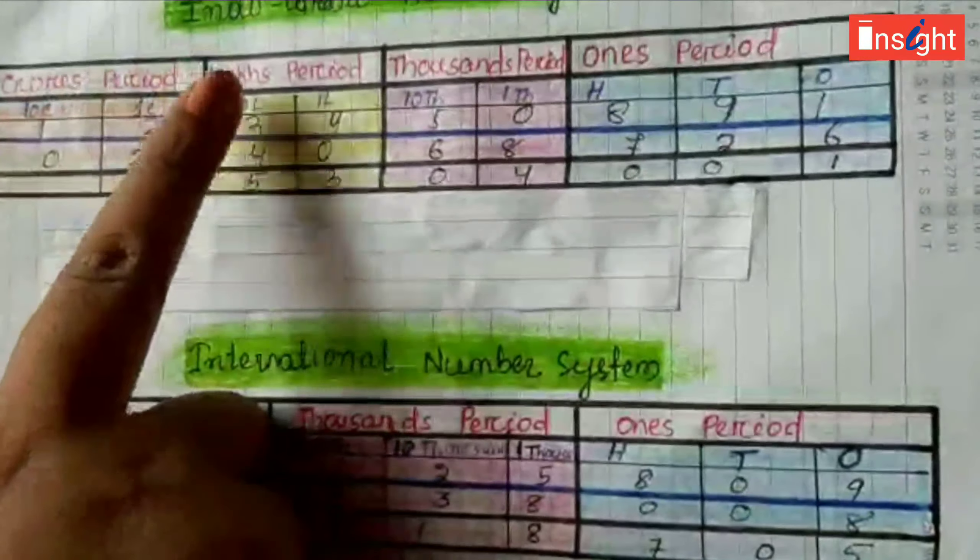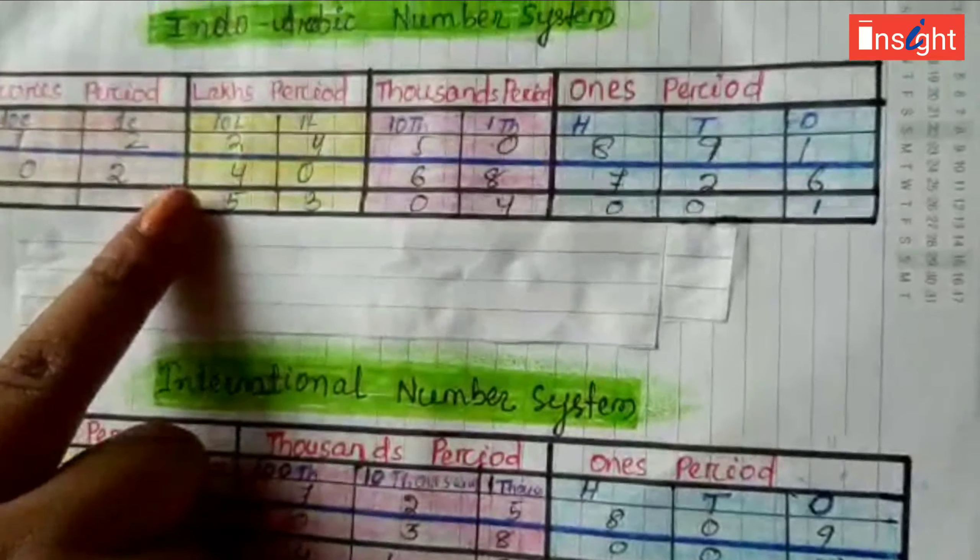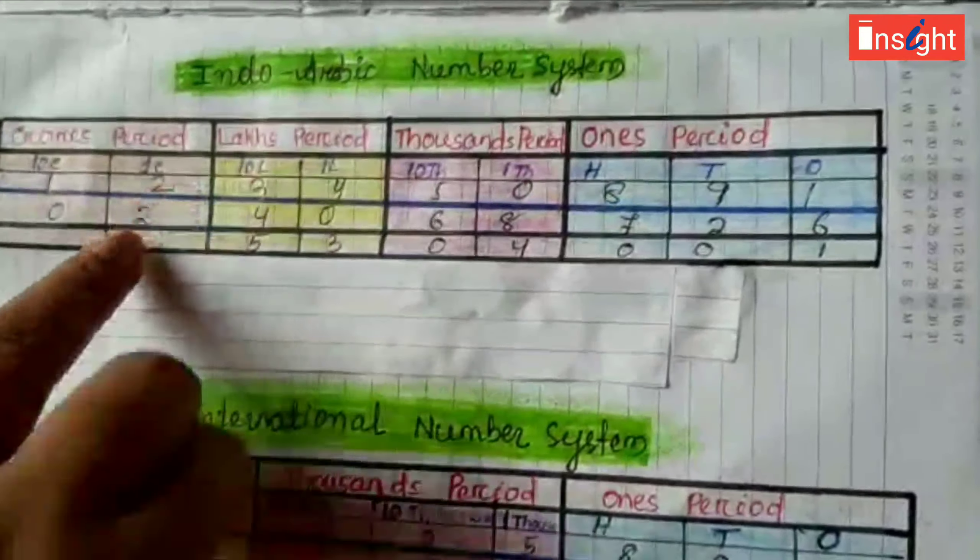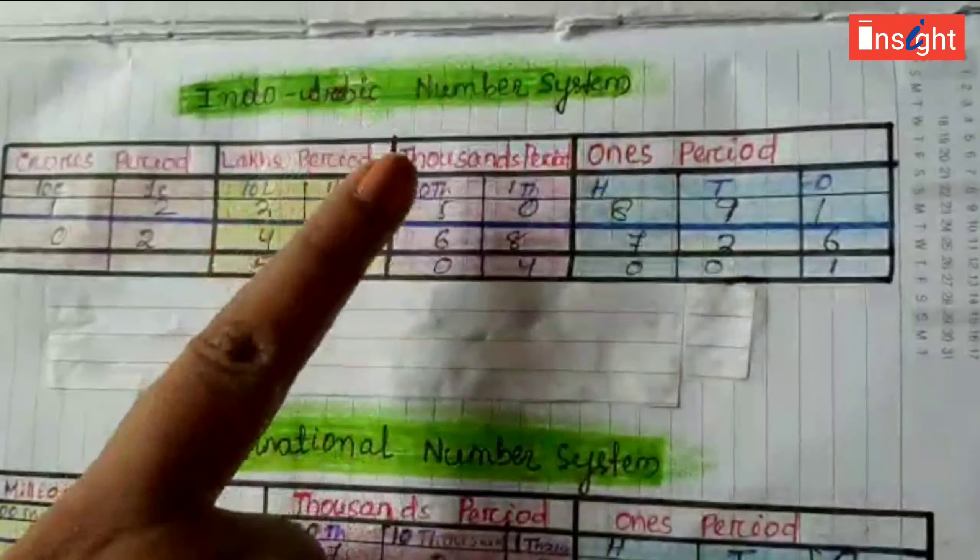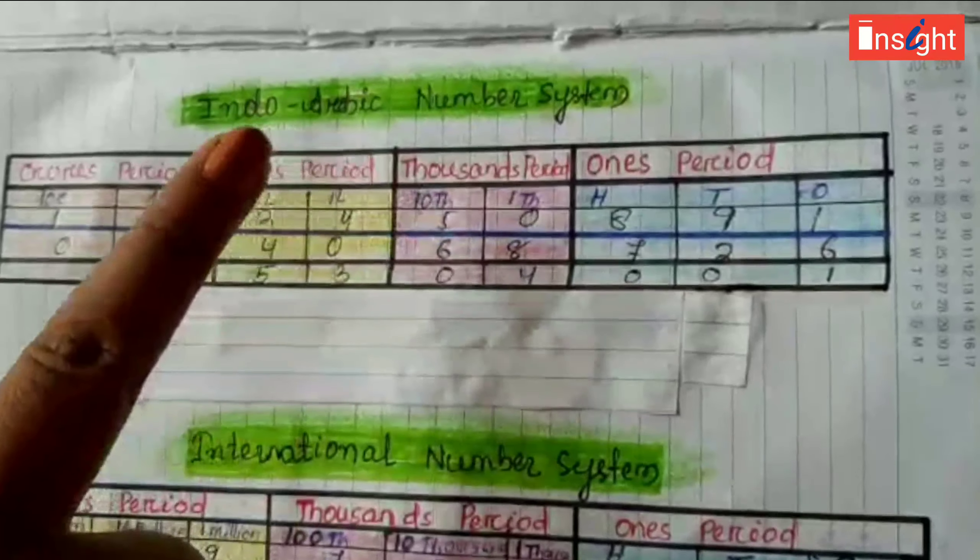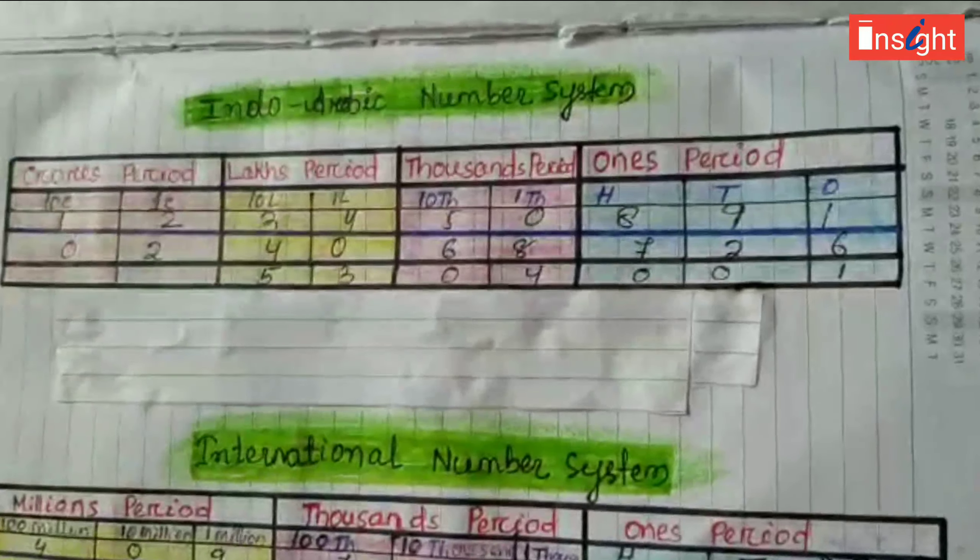So, Indo-Arabic number system is derived into four categories. Last one, once period, then thousand period, lakhs period and crores period.